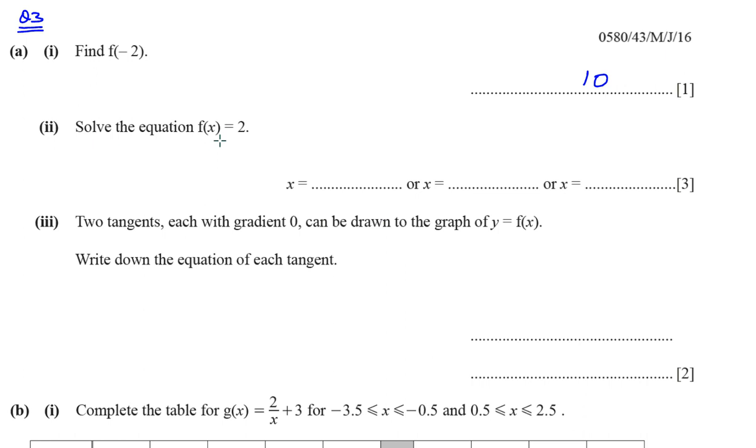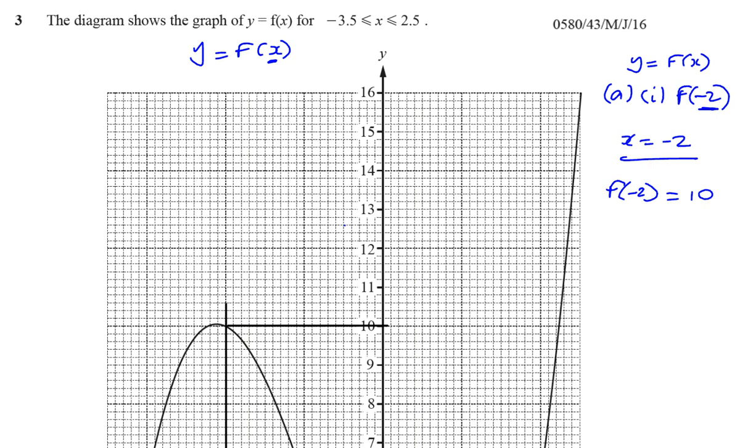Then it says, solve the equation f(x) equals 2. And you see there's space for three answers. The three values that they want us to find. So, f(x) equals 2. Let's see how to solve this. Part B is saying solve equation f(x) equals 2.